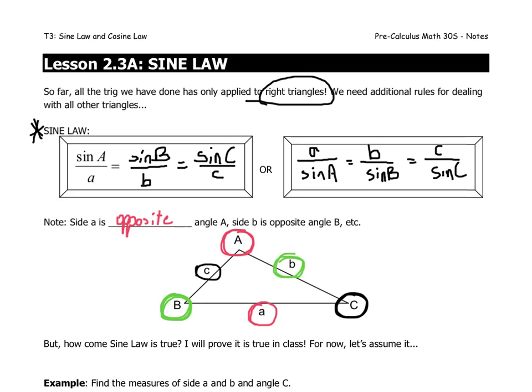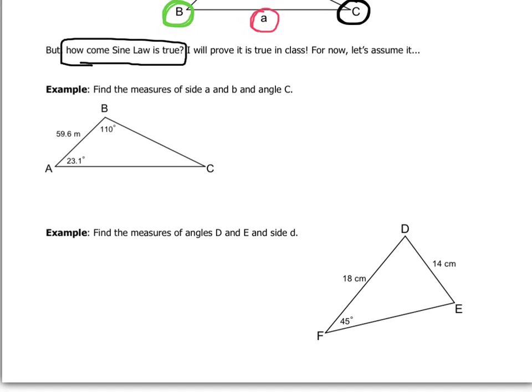Now, you've seen Soh Cah Toa before. Sine is opposite over adjacent, and that was only for right triangles. So you might ask yourself, how come Sine Law is true? That's a very important question, right? You can't just buy something that I tell you. Why is it true that this is always going to work for every triangle? Well, for that, you're going to have to wait until class. We're going to do that together as a group. For now, I'm going to have to ask you to assume it's true until such time as you see the proof in class. So for now, let's do some examples.